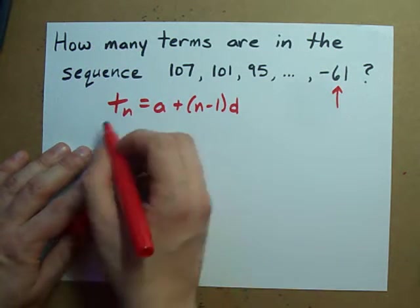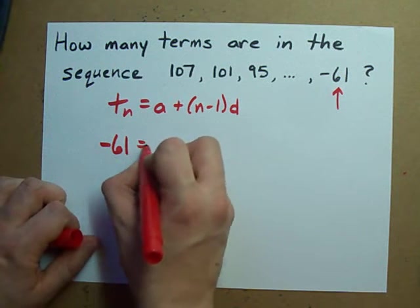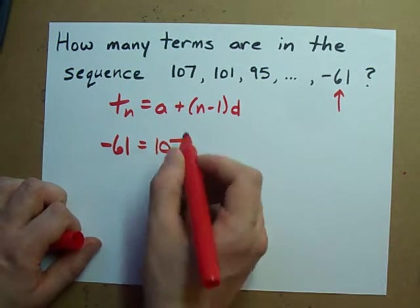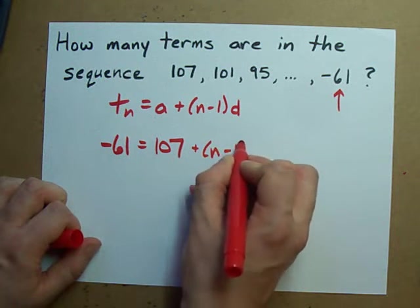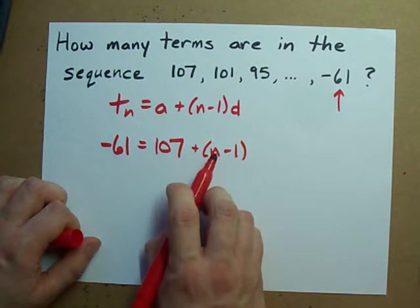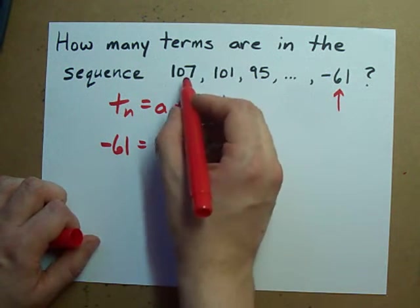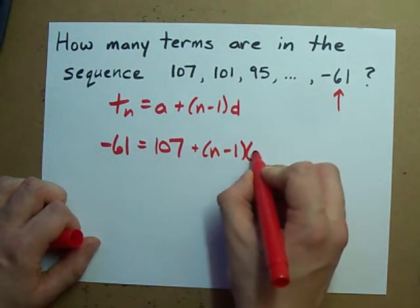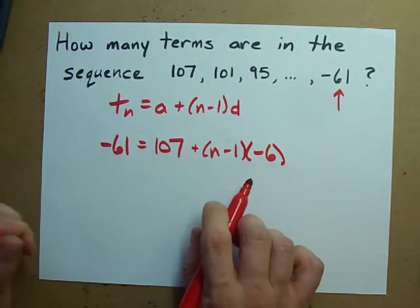We want to know what it is. So, we plug that in for the value of the term. We know that the first term is 107, because they told us. What we don't know is n. We don't know what term number negative 61 is. But we also know that we're going down 6 every time. So, we have to multiply this whole thing by negative 6.